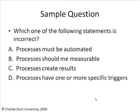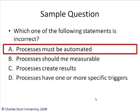Here's another sample question. Which one of the following statements is incorrect? Answer A: processes must be automated. Answer B: processes should be measurable. Answer C: processes create results. Answer D: processes have one or more specific triggers. The right answer is of course Answer A — processes must be automated. No, not necessarily. A lot of processes will be manual, and some processes will be partly manual and partly automated. So Answer A is the incorrect answer.